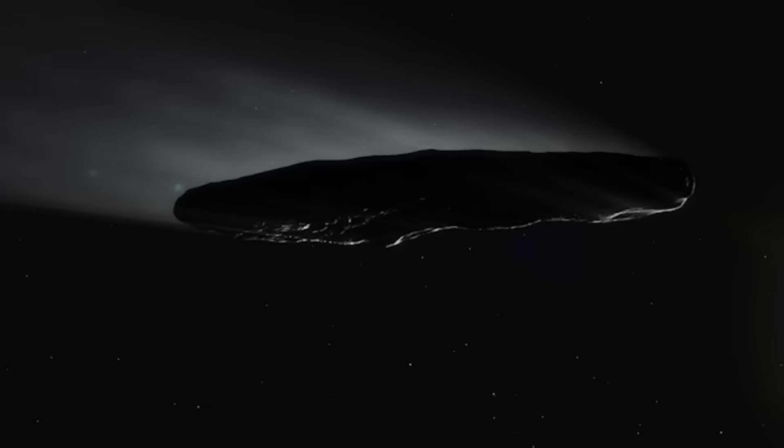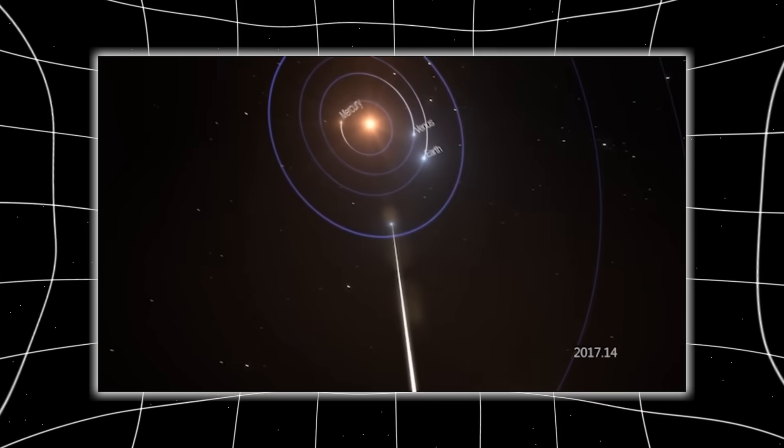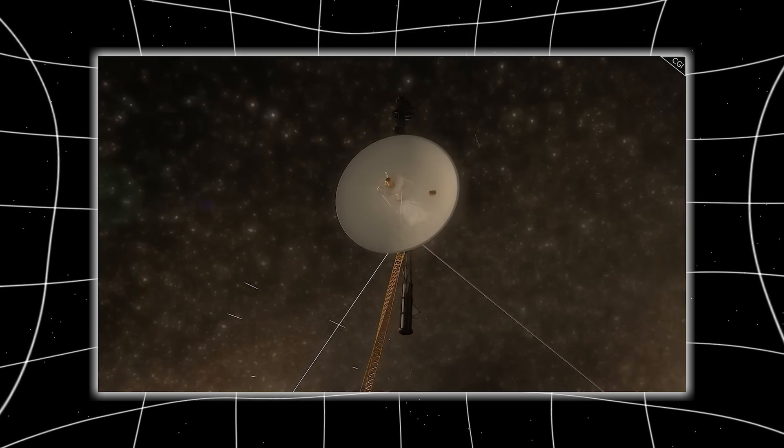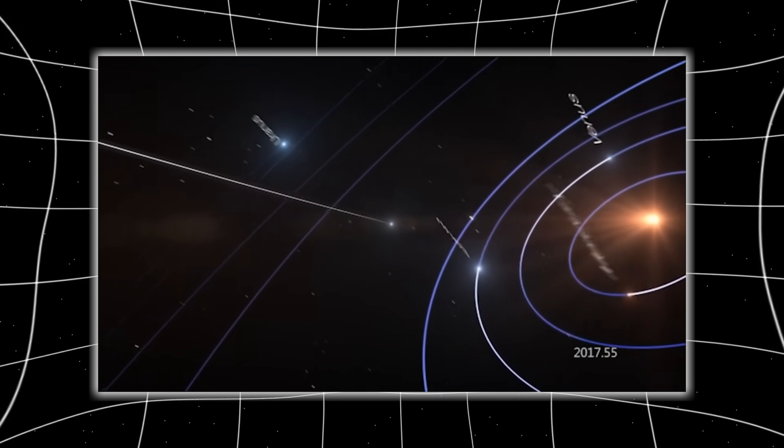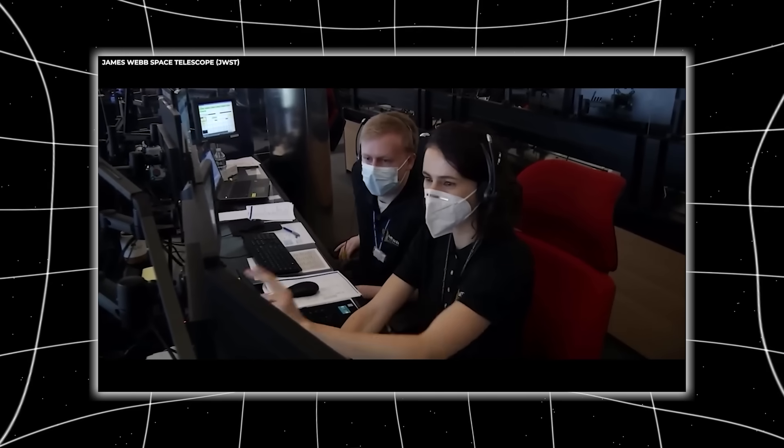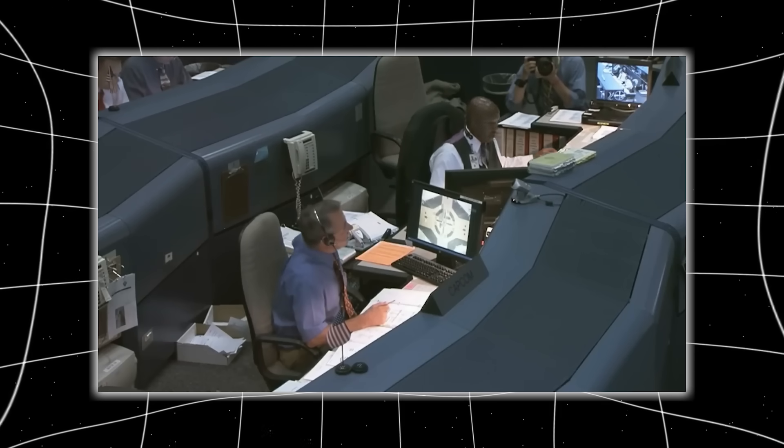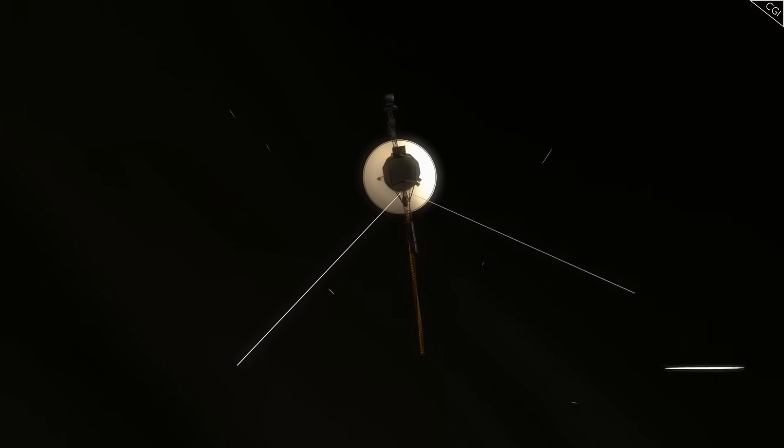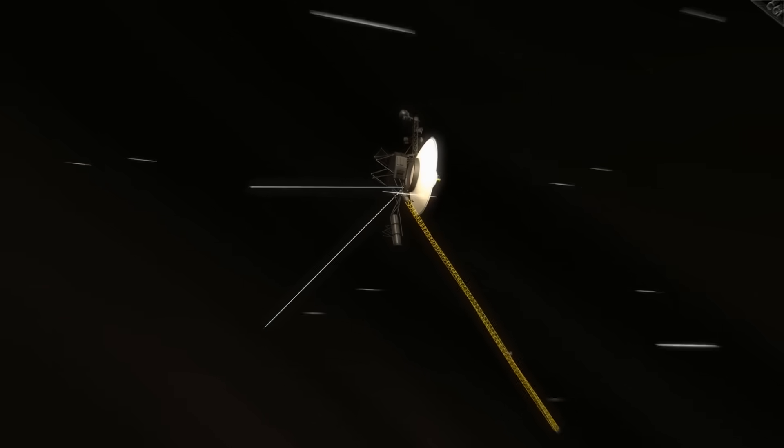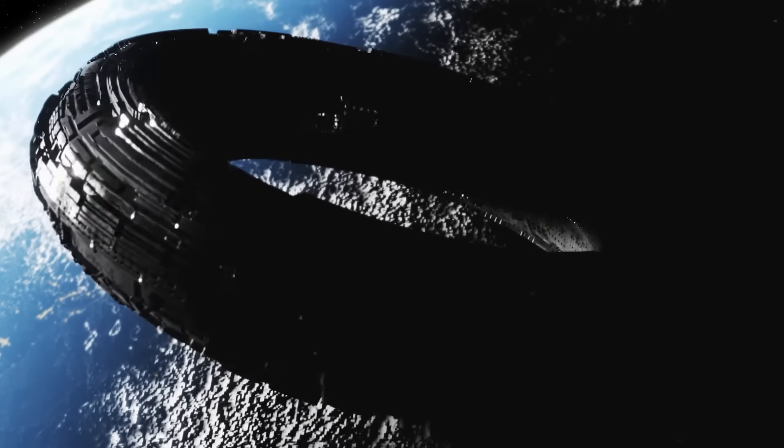What's even stranger is that this realignment pointed not at 3i Atlas's last known position, but toward its projected future path, weeks ahead. It was as if Voyager was predicting where Atlas would go next, like a chess player anticipating a move before it happens. Engineers at JPL claimed the shift was due to a minor miscommunication with the deep space network, but leaked internal memos suggested something more unnerving. The probe had changed direction before commands were sent. This leaves only two possibilities: either Voyager is malfunctioning in a highly coordinated way, or something out there is controlling it remotely.